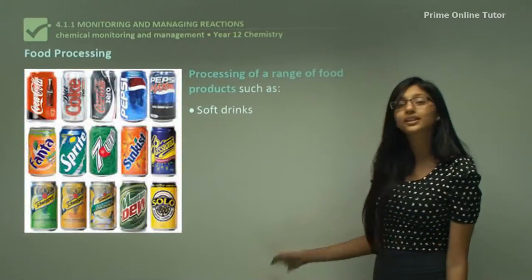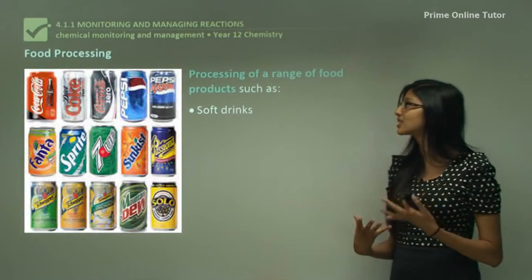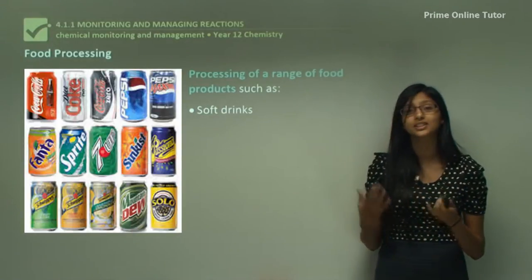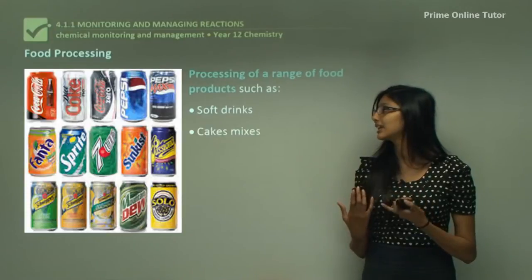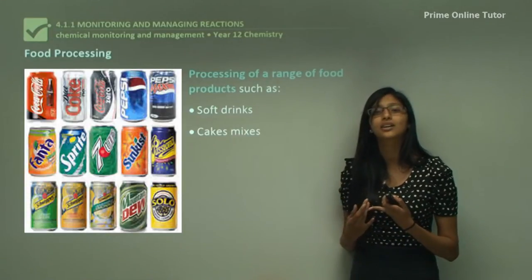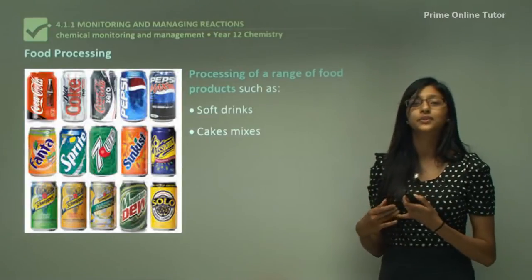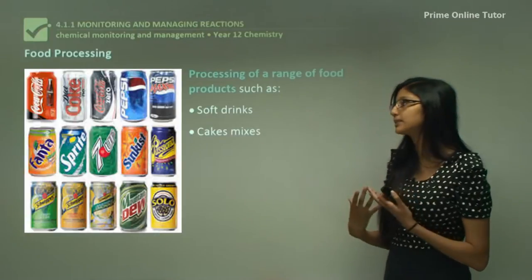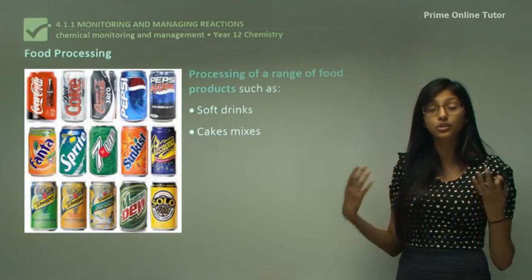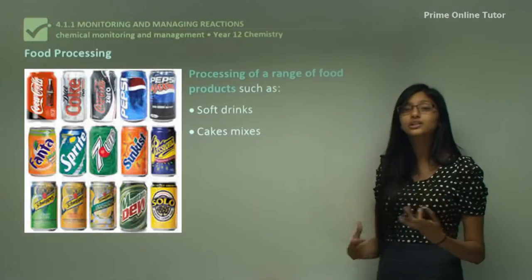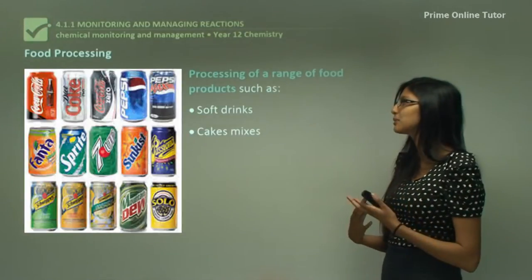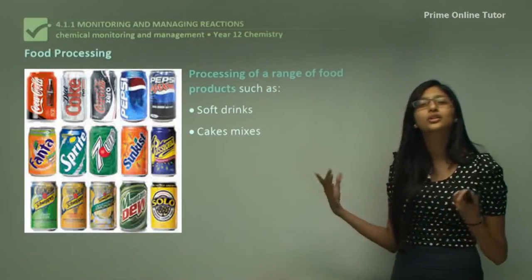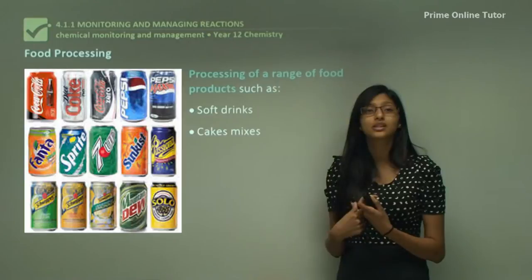Now let's look at the food processing industry. As the name suggests, it helps us to produce different kinds of food such as soft drinks and cake mixes. Soft drinks are made using carbon dioxide, which provides the fizziness — we don't want too much or too little carbon dioxide. With cake mixes, we need to know how much sodium bicarbonate should be used in the product.